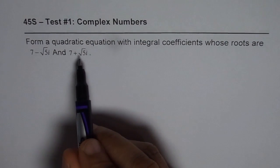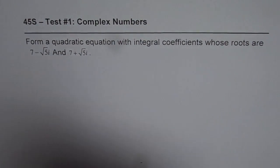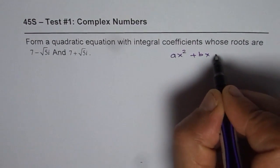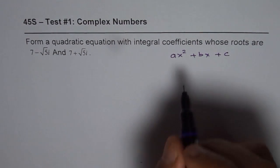Now we have given two roots and need to find the quadratic equation. Generally, a quadratic equation is written as ax square plus bx plus c.